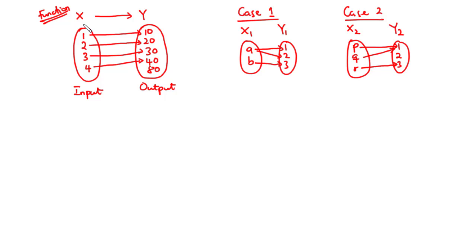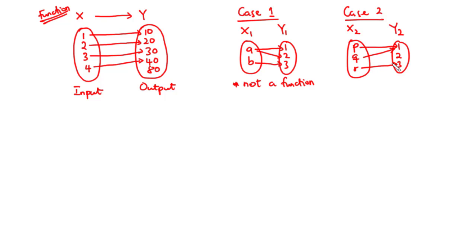For the mapping of X to Y to be a function, each element of the input must correspond to exactly one element in the output. In Case 1, element a in the input corresponds to two different elements in the output — 1 and 2 — so this cannot be considered a function. In Case 2, each element of the input corresponds to exactly one element in the output: p to 1, q to 1, and r to 3 — so Case 2 is a function.